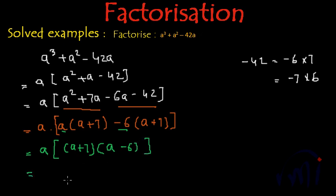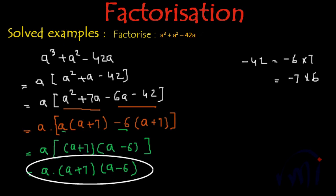And now this square bracket can be opened and we will have a × (a + 7) × (a - 6). So this expression actually has three factors. First is 'a', second one is a + 7 and the third one is a - 6. So these are the factors of a³ + a² - 42a.